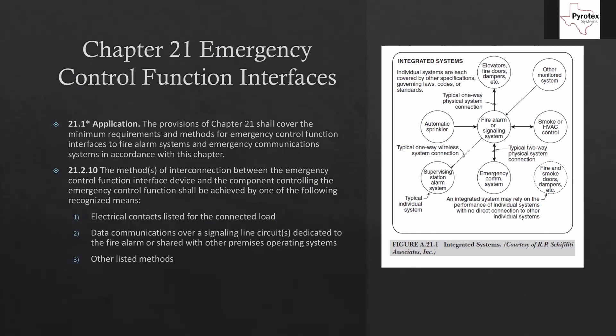Up at the top we have the elevator, fire doors, and dampers. There's no signal for them to send back to us — we're just telling them what to do. Other monitored systems could be like a kitchen hood or something else in the building that we just need to know the status of, so that's just an input to us. Same with sprinkler systems — they're just an input. The last one is the supervising station alarm, the central station we send everything out to over phone lines, cellular, or IP. That's a one-way communication; the central station doesn't send us a signal back — they just receive the alarm signals and report to the customer.